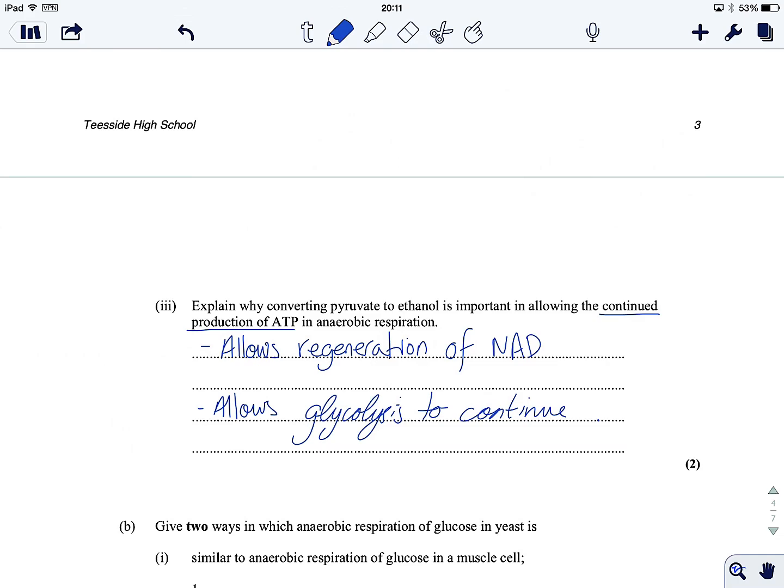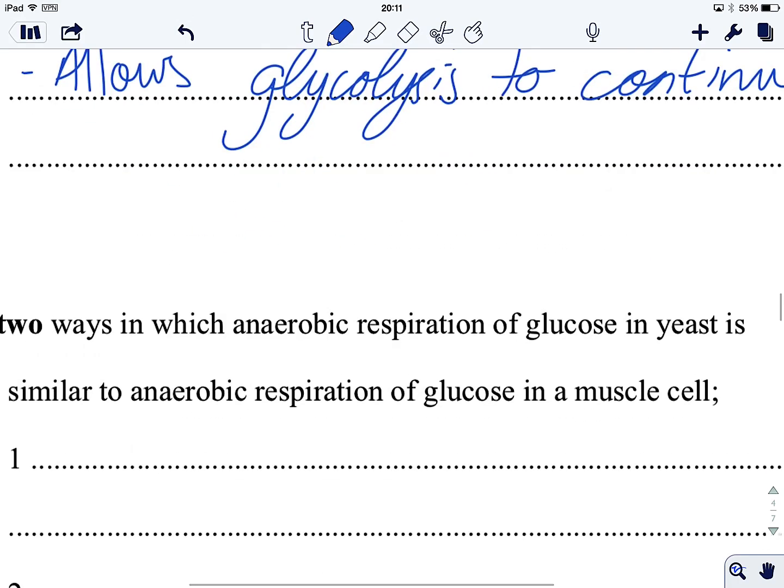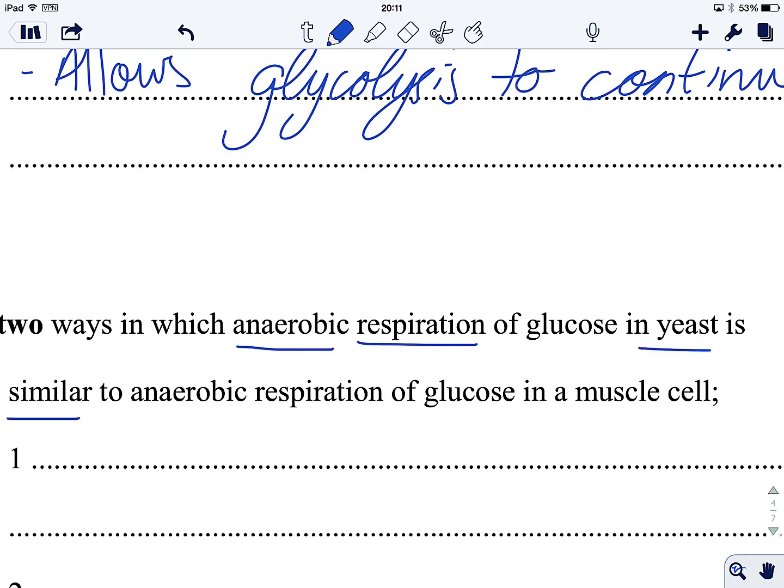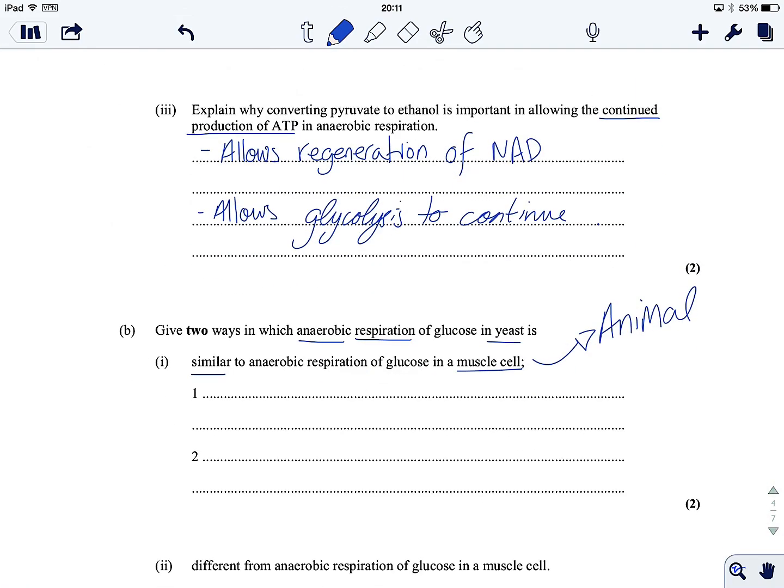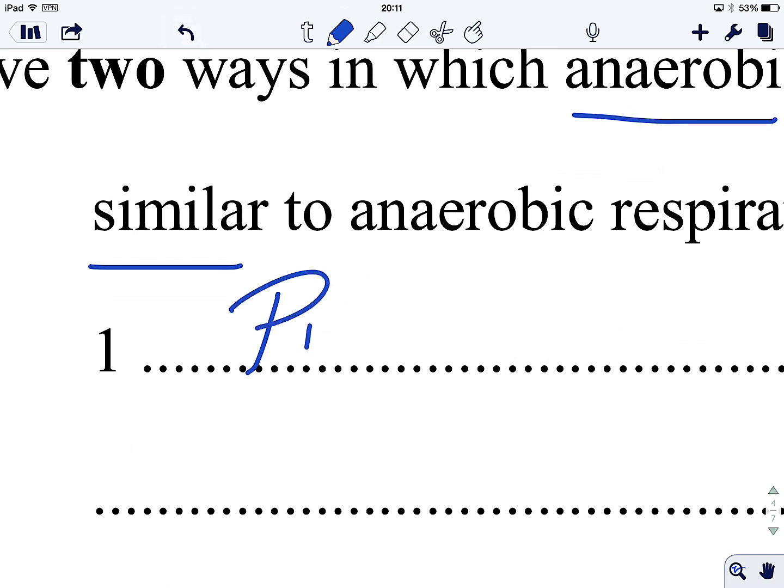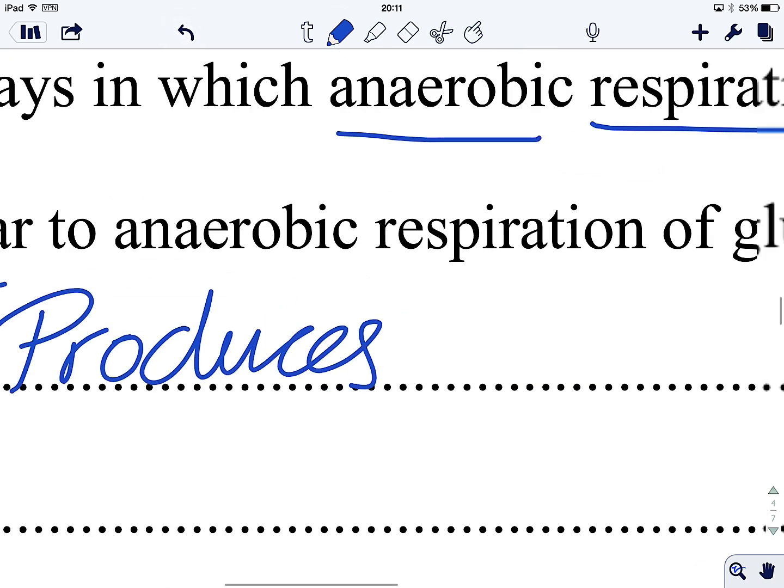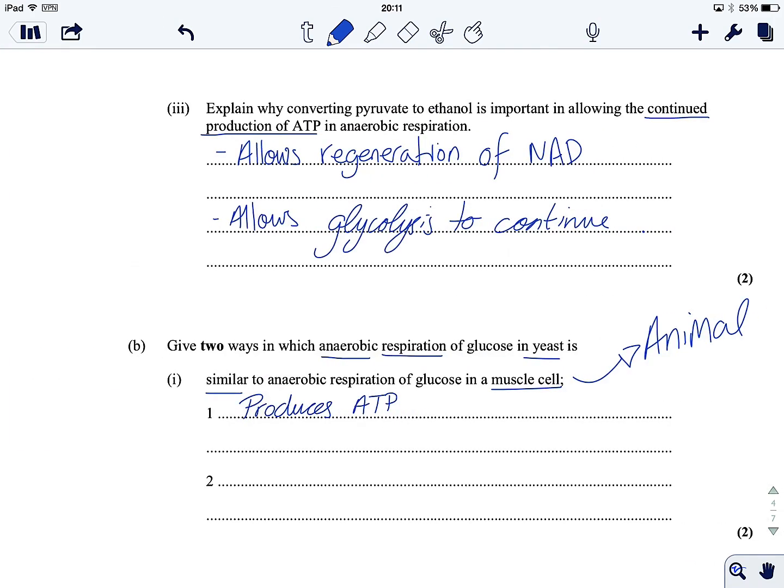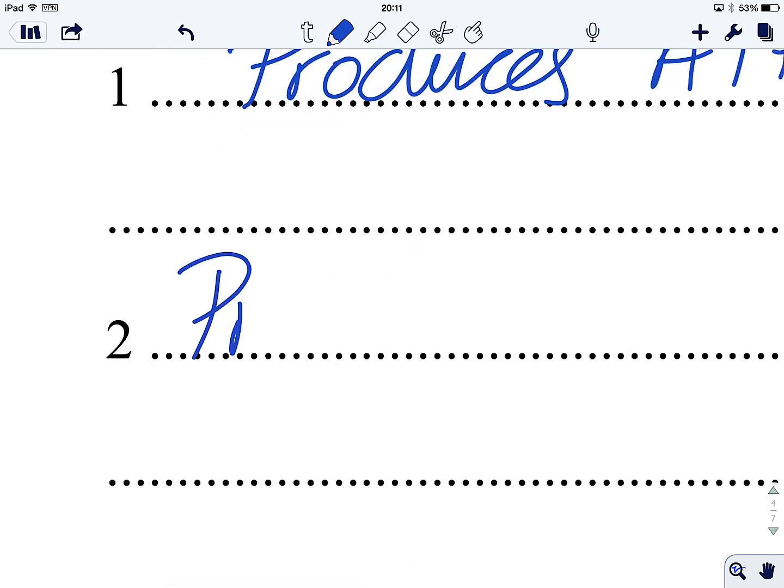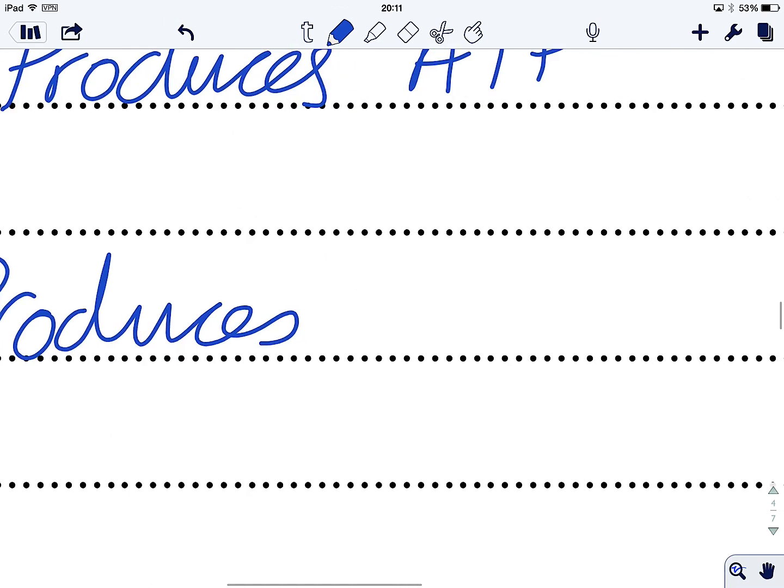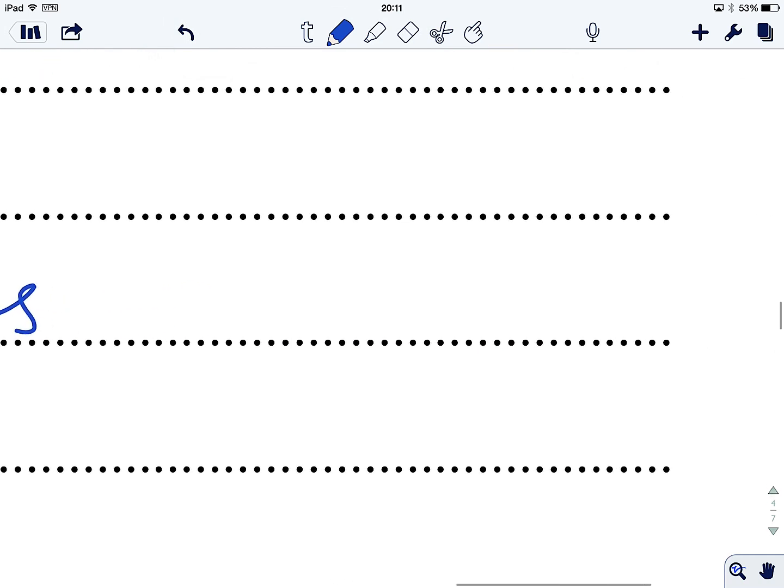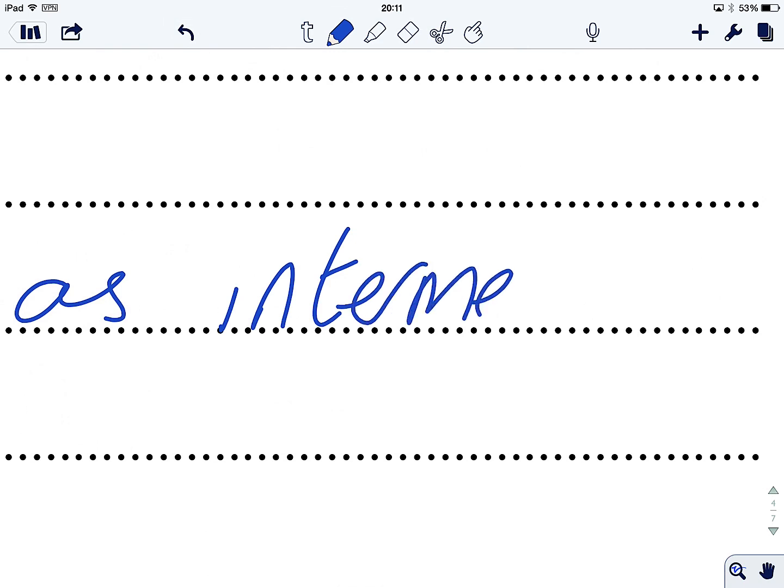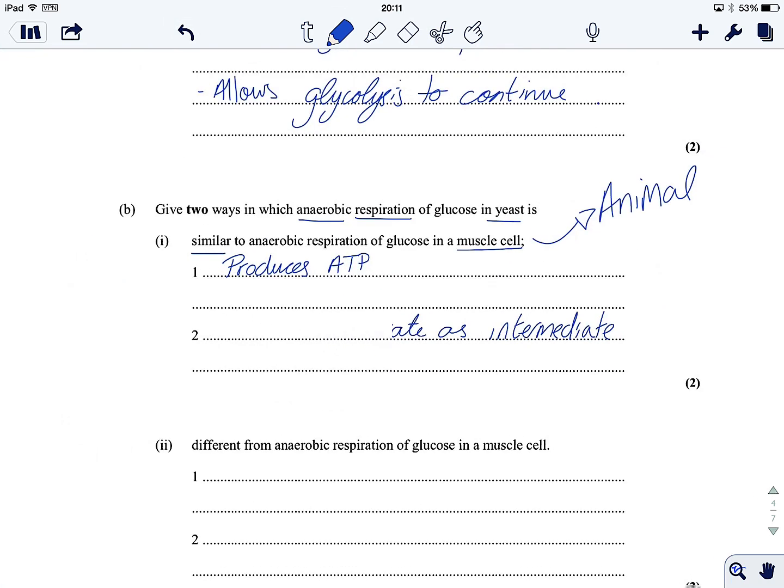Let's move on to part B. Give two ways in which anaerobic respiration of glucose in yeast is similar to anaerobic respiration of glucose in a muscle cell. Muscle cells are animal cells. Make a note of that. How is it similar? Well, for one, it produces ATP, which is good. We like ATP, no matter how small the amount we get. You could also say that it involves production of pyruvate as an intermediate. So as an intermediate, we get pyruvate. Two similarities.